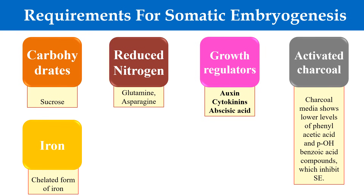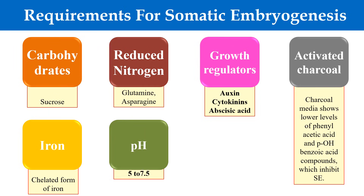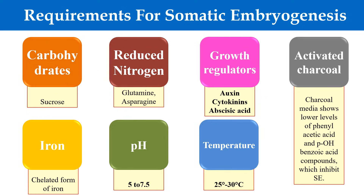The next requirement is iron — generally the chelated form of iron is used during somatic embryogenesis. The next requirement is the culture condition, which includes pH. For somatic embryogenesis, pH is generally 5 to 7.5 and temperature is usually 25 to 30 degrees Celsius. These are the requirements to carry out somatic embryogenesis.